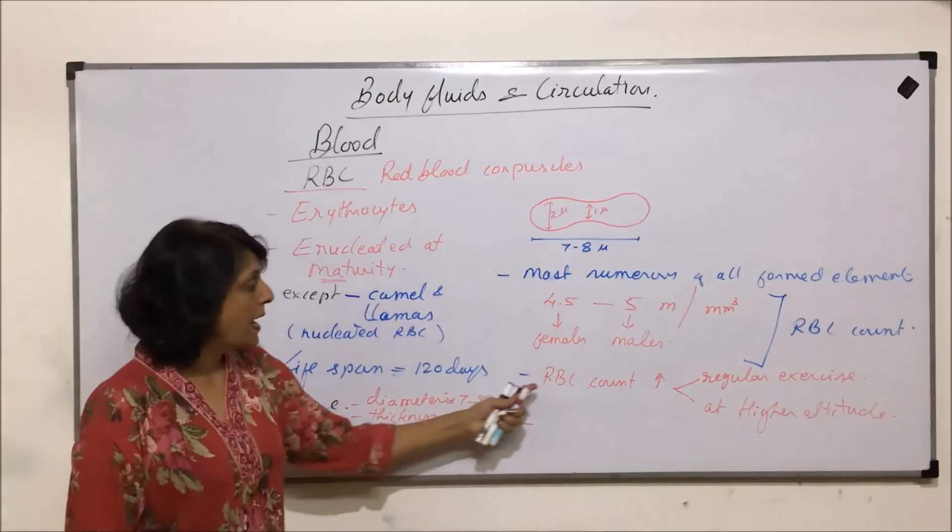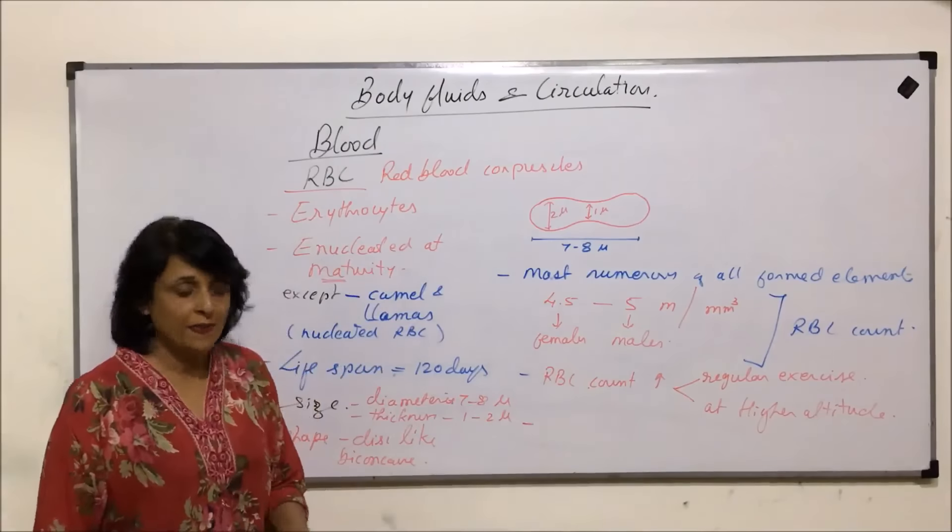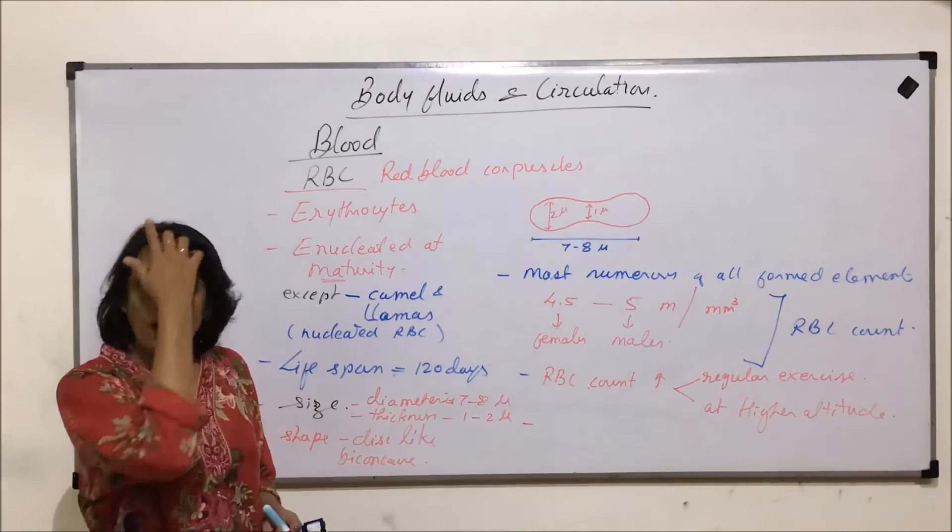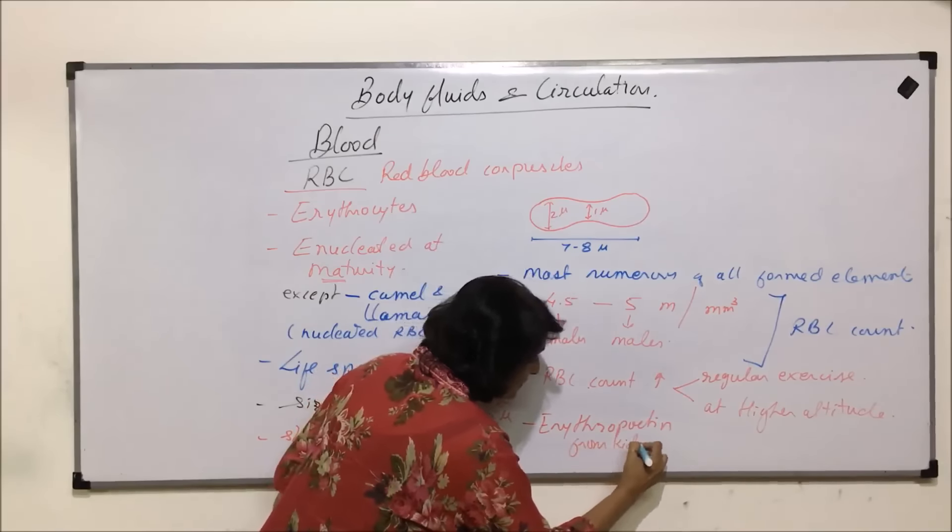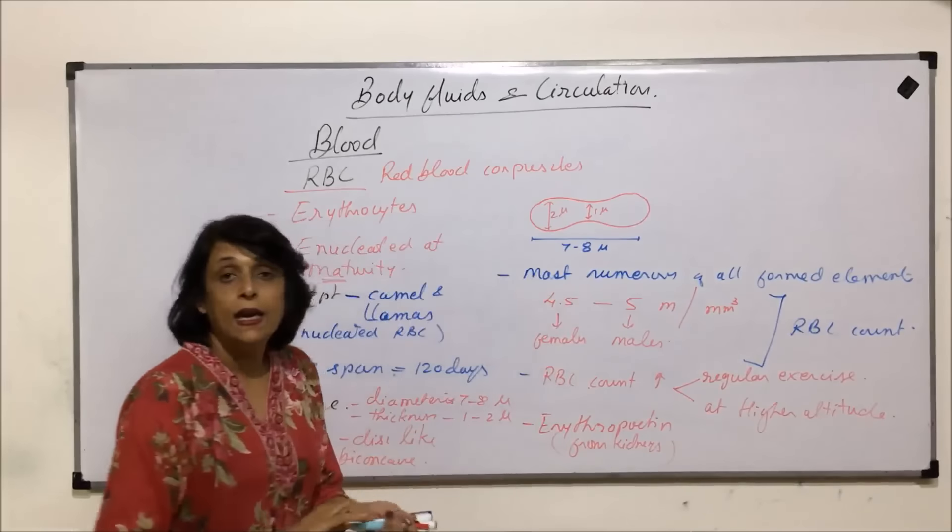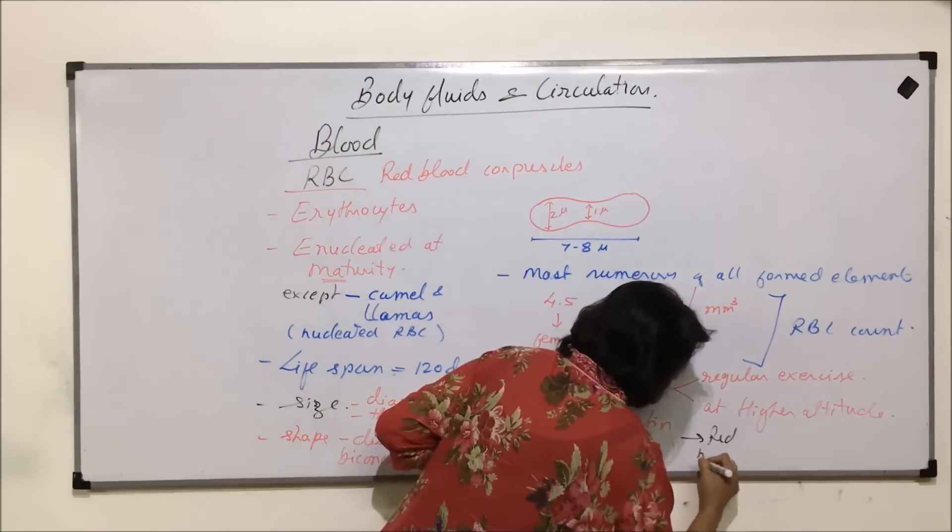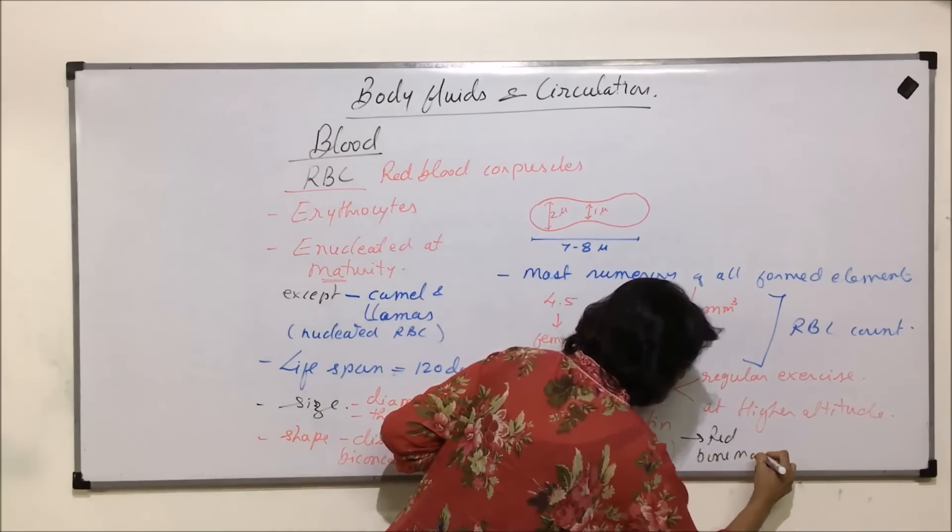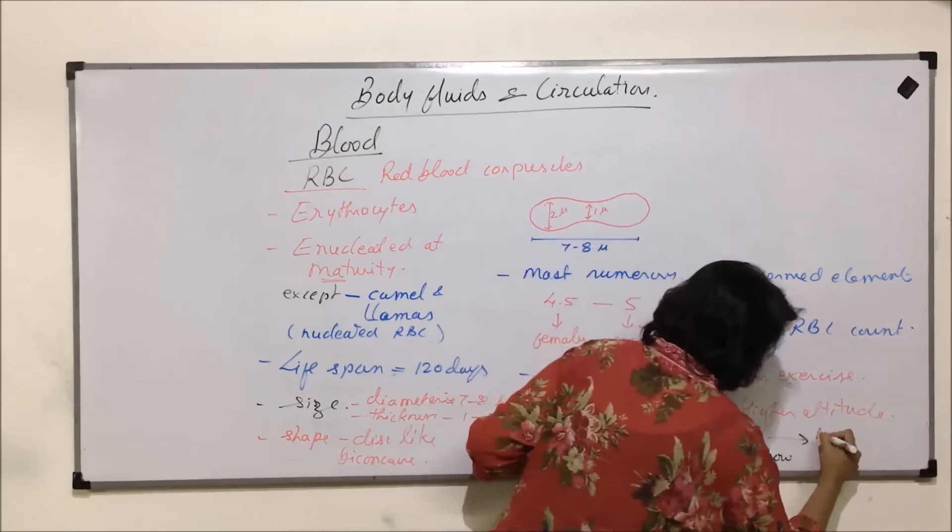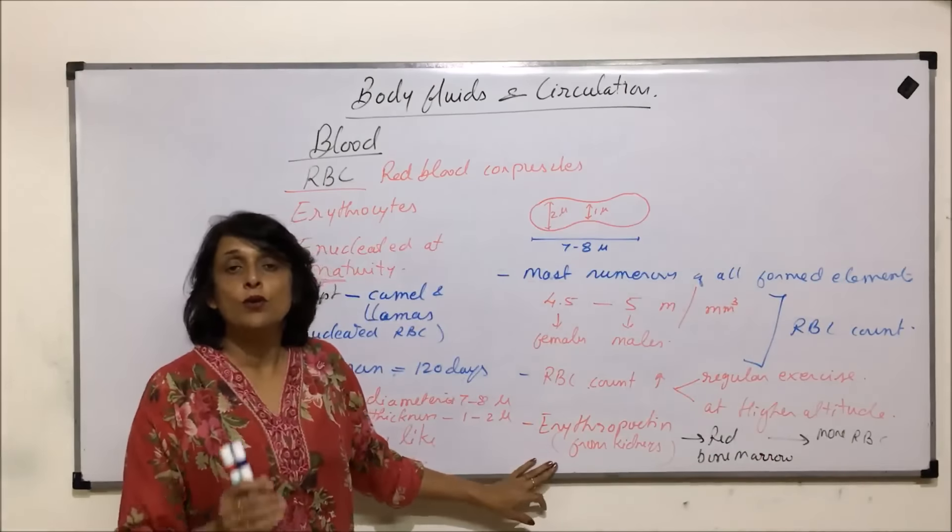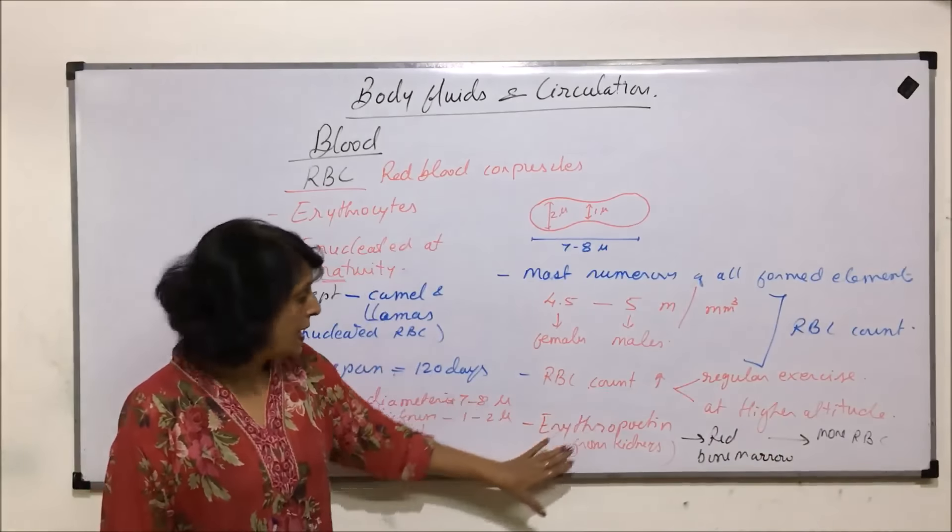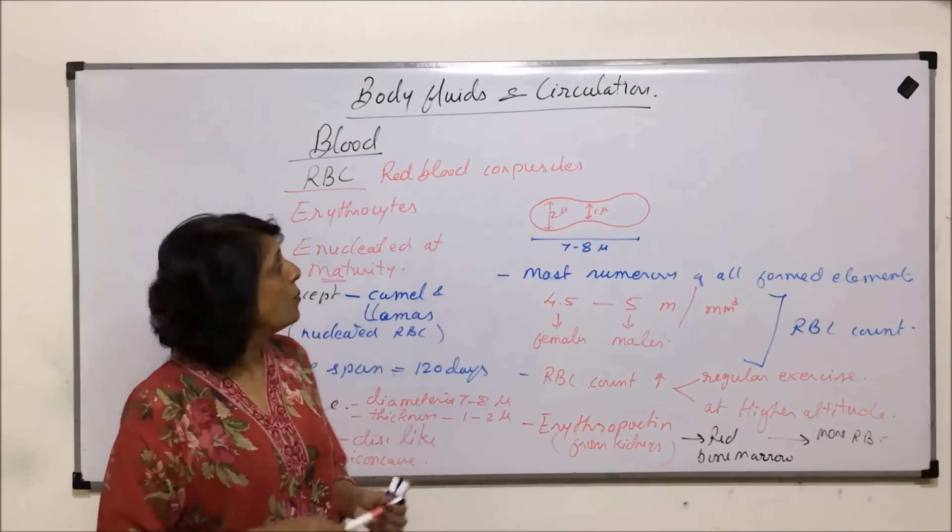Now let us give two terms. How does this RBC count increase? It is done with the help of erythropoietin. It is a chemical released from kidneys. Erythropoietin from kidneys helps or stimulates red bone marrow to form more RBCs. Erythropoietin is the chemical which is going to trigger formation of RBC.